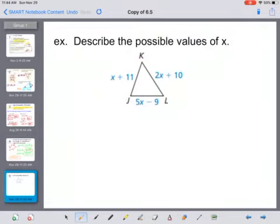And you can solve that with expressions for all of the sides. And again, we would need to set up three inequalities. So x plus 11 and 5x minus 9 must be greater than the third side.